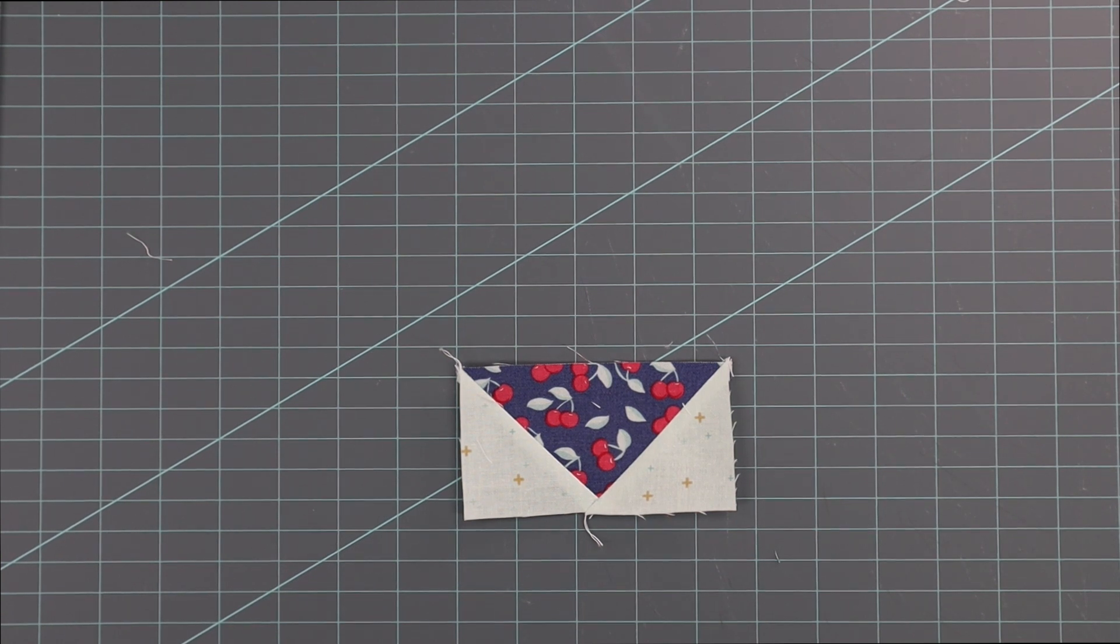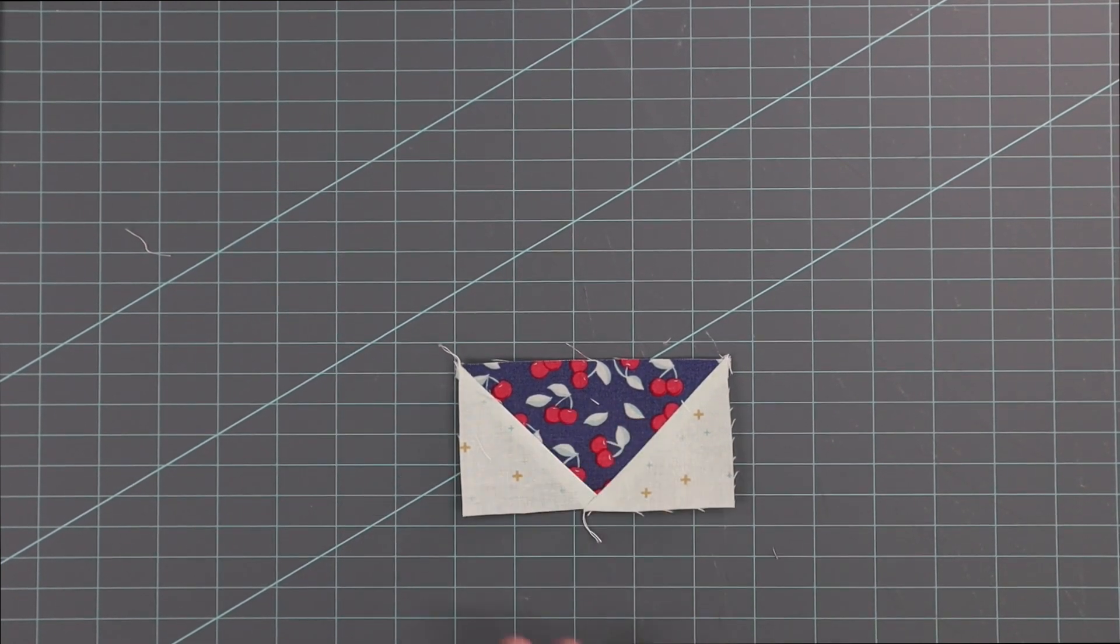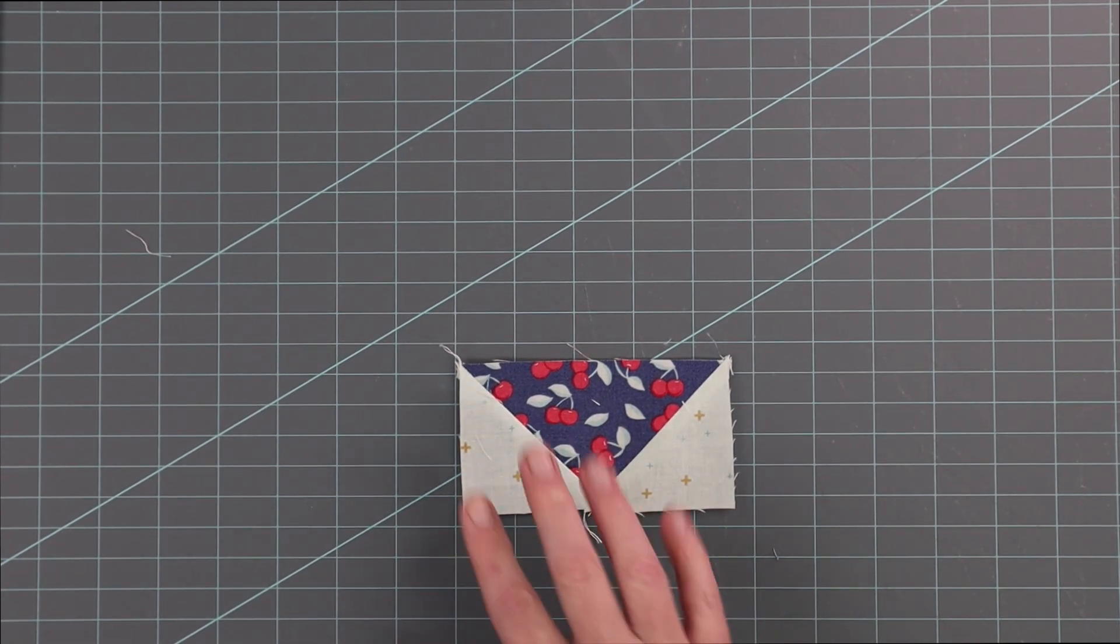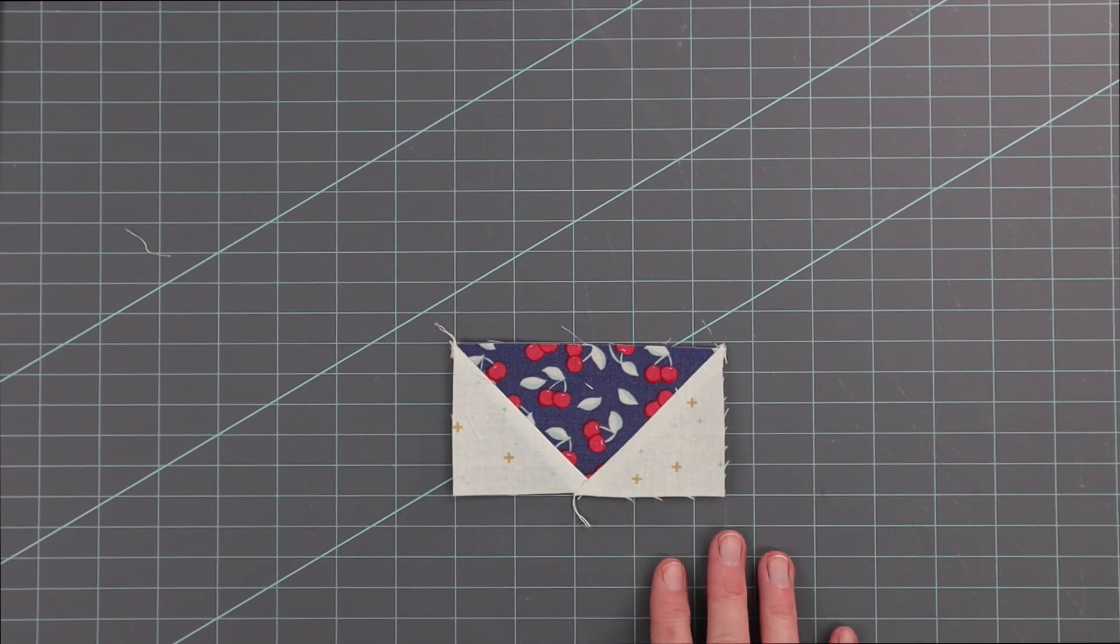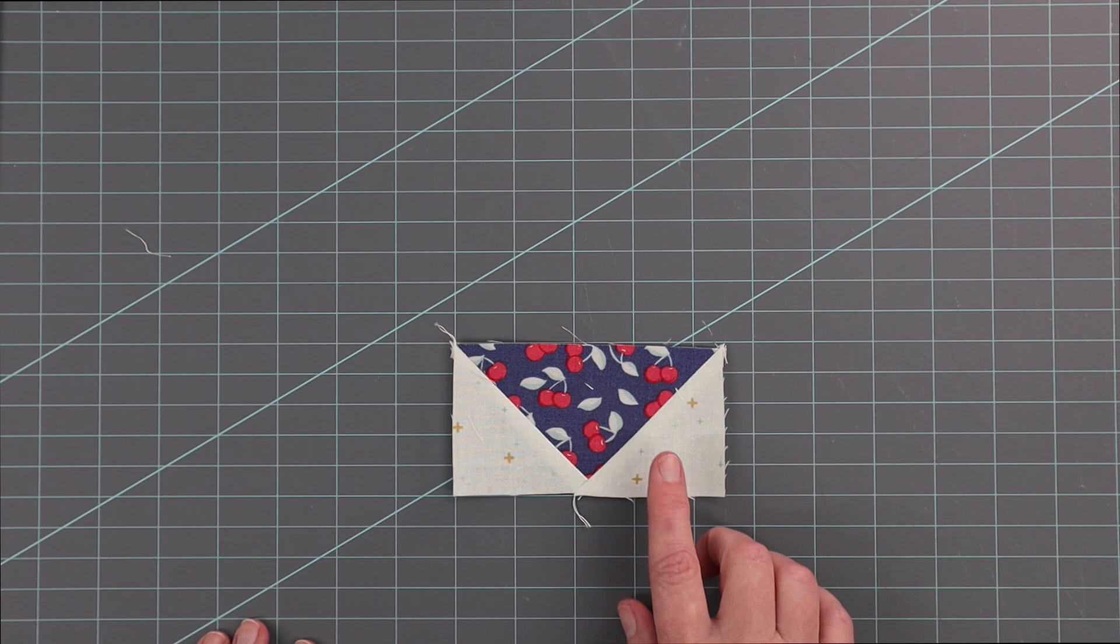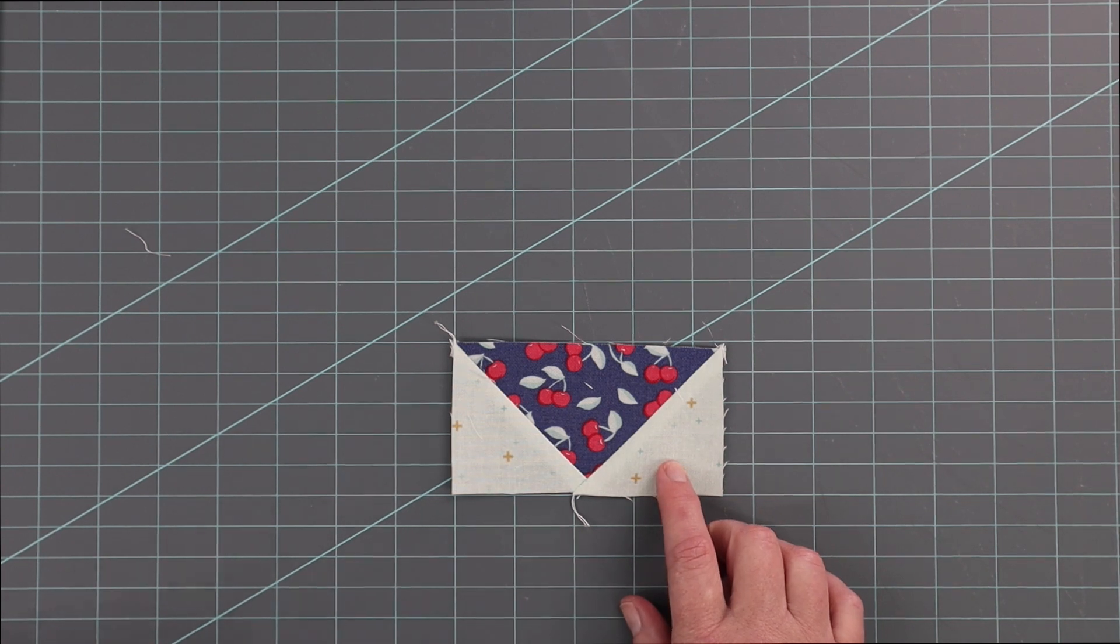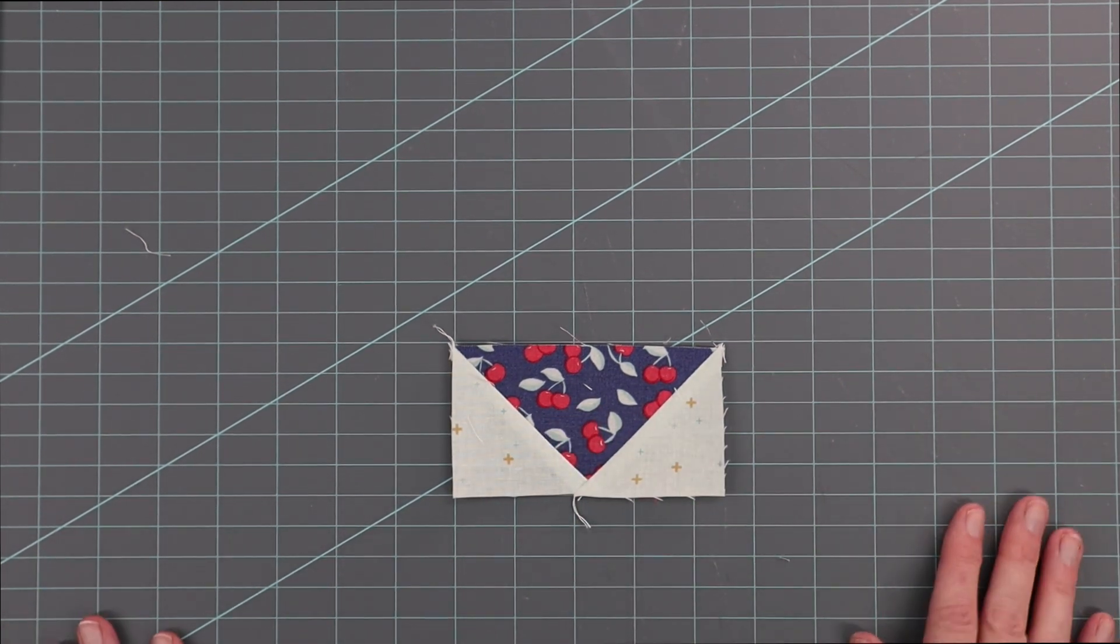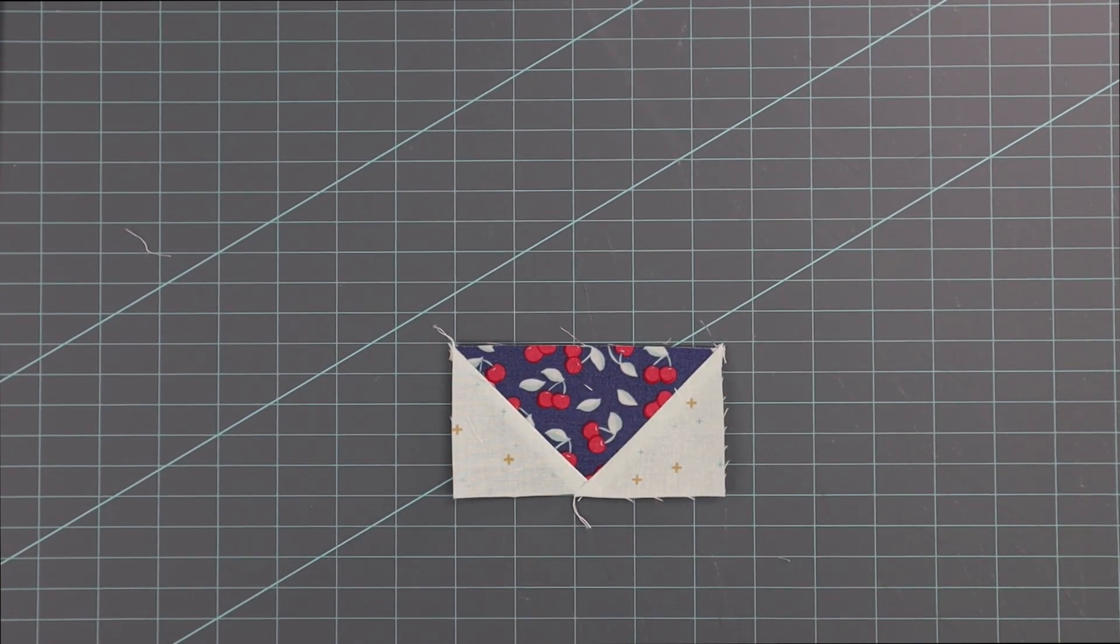Moving on to step four of the pattern, you are going to create a flying geese block with the blue and the background fabrics. If you are just stumbling onto this video, this is part of a series of six videos, so I have covered how to create a flying geese block in another video. I'll link that up in case you want a reminder or you just kind of stumbled in. The remainder of this section of the block is quite simple to assemble.